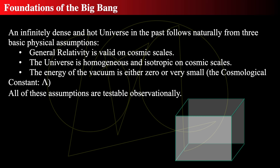The foundations of the Big Bang are very deep, beginning in the 1920s and continuing today. The concept is an arbitrarily highly dense and hot universe in the past. Three basic assumptions follow: the universe is homogeneous and isotropic on large scales, which means general relativity is valid everywhere; and the energy of the vacuum — the cosmological constant — is tiny or small, which is why it doesn't seem to have much effect.